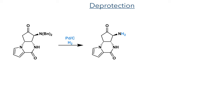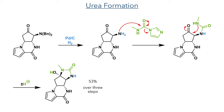With this in place, the other amine group was then deprotected, this time with a debenzylation using palladium on charcoal and hydrogen gas. N-methyl imidazole carboxamide was then added to the reaction mixture and this is attacked by the newly produced amine to eliminate imidazole. The N-methyl group is then positioned above the cyclopentenone ring and attacks the carbonyl centre, forming the hemiaminol in a 53% yield over three steps.